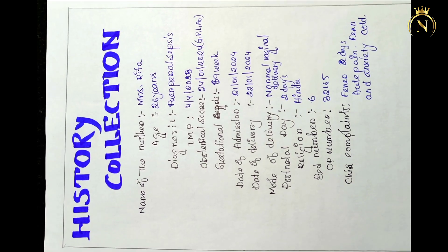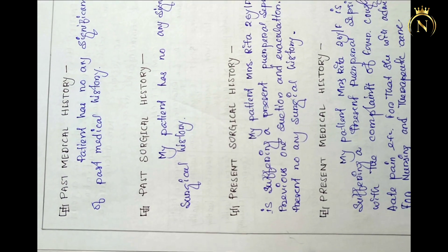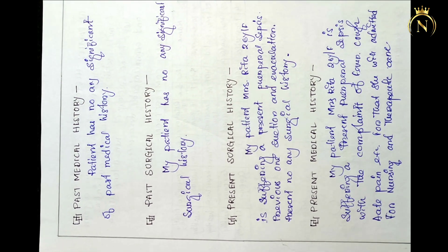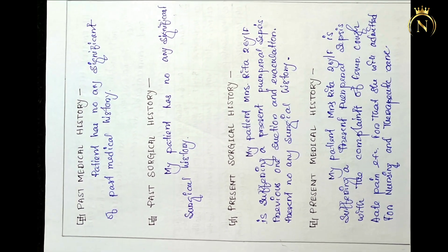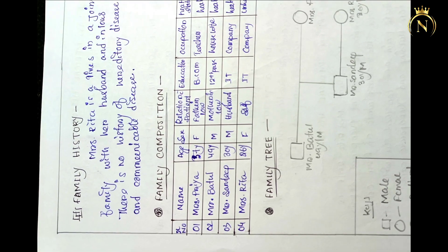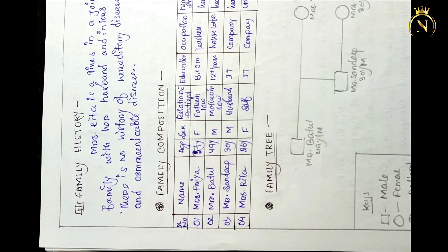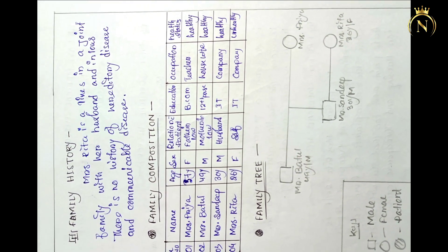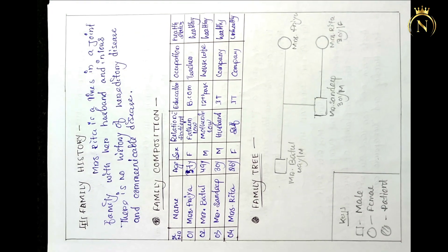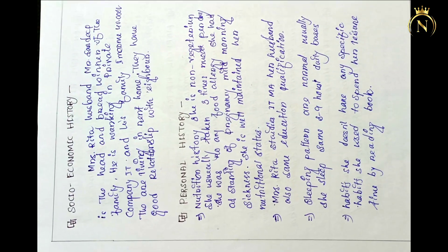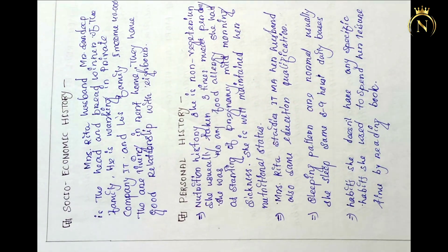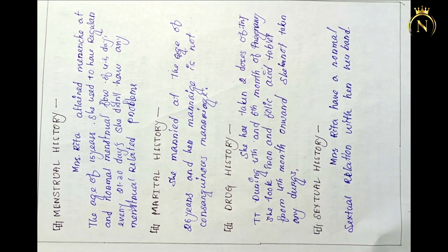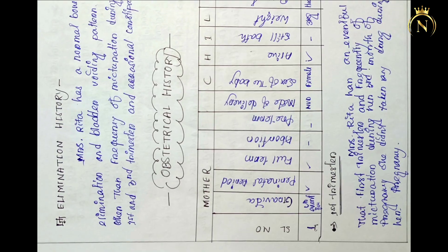After history collection, you have to write the first page as medical history — past medical and surgical history. After that, you have to write the family history, family combination, and family tree. You have to follow the same format for each care panel case study. After that, write the socioeconomic history.